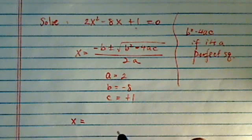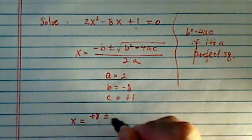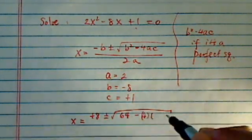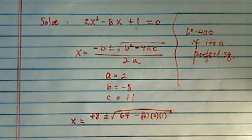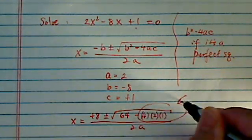So x is equal to minus b, so it's minus minus 8, which is positive 8, plus minus b squared, which is 64, then minus 4ac. So I plug it in there too.